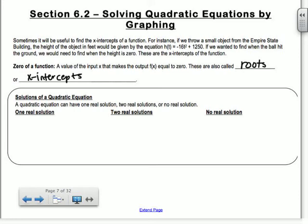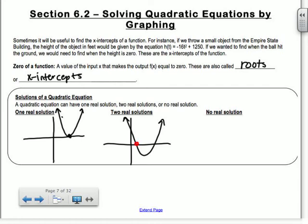If I have one real solution, so one real root or x-intercept, think about what your graph would look like. It would come down, hit, and then go back up. You could also have a downwards parabola. Two real solutions means your parabola would intersect in two places along the x-axis. No real solution means it just comes down and goes back up, and it never intersects. Those would be solutions with i in them.